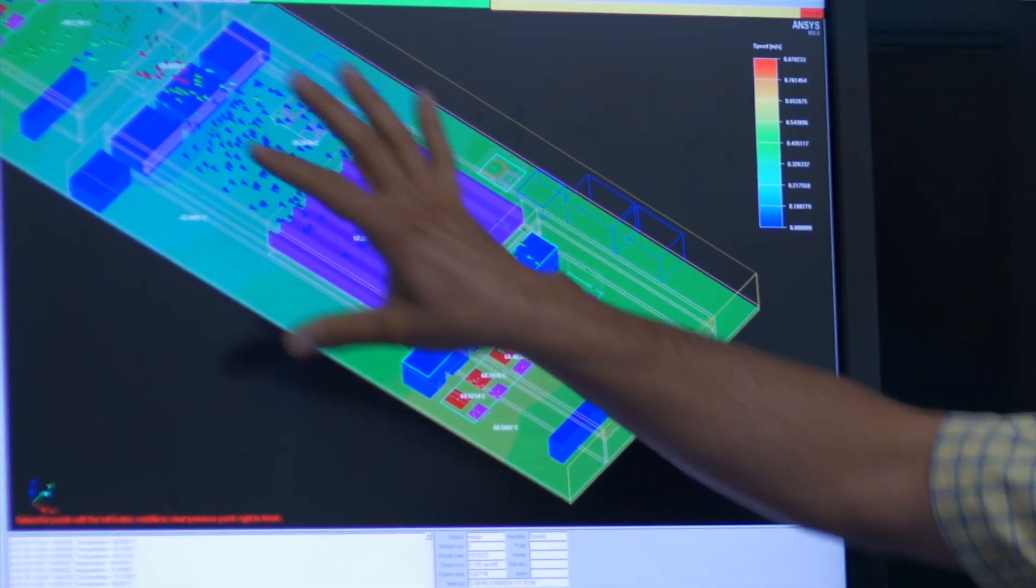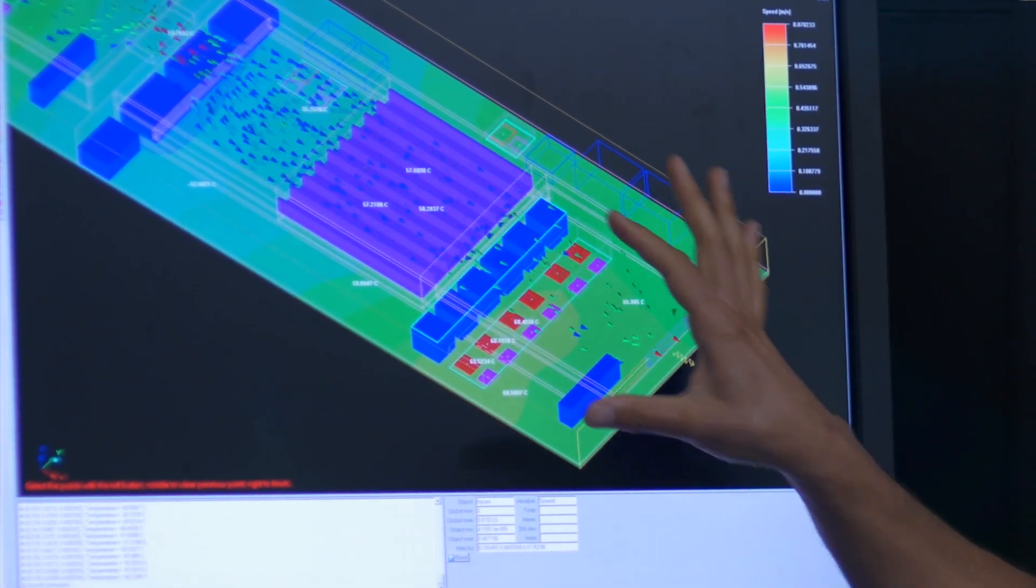The bottom side has cold plates, and the cold plates actually run water through them to actually cool both the GPU and the processor. And the top side has an air cooling section where the water is cooled through a radiator with a fan.